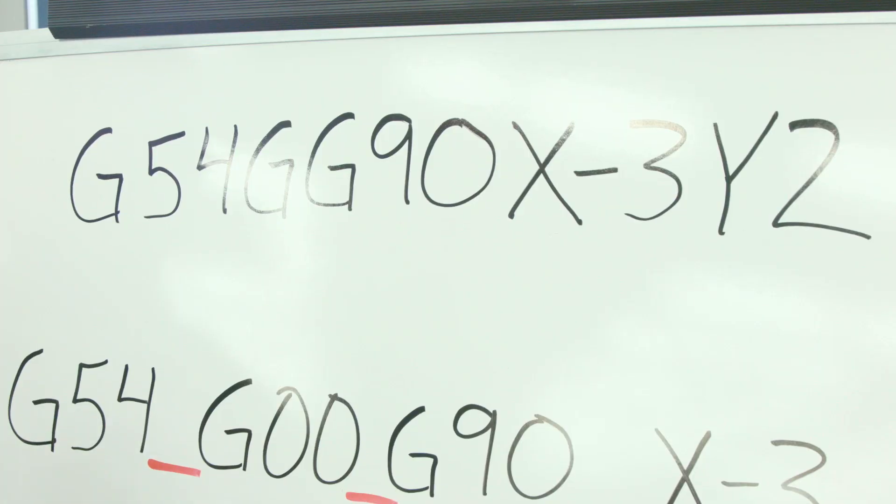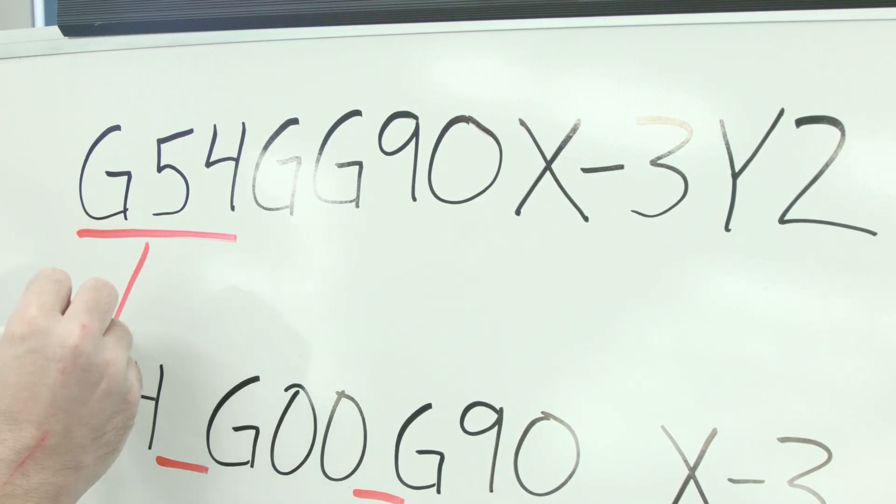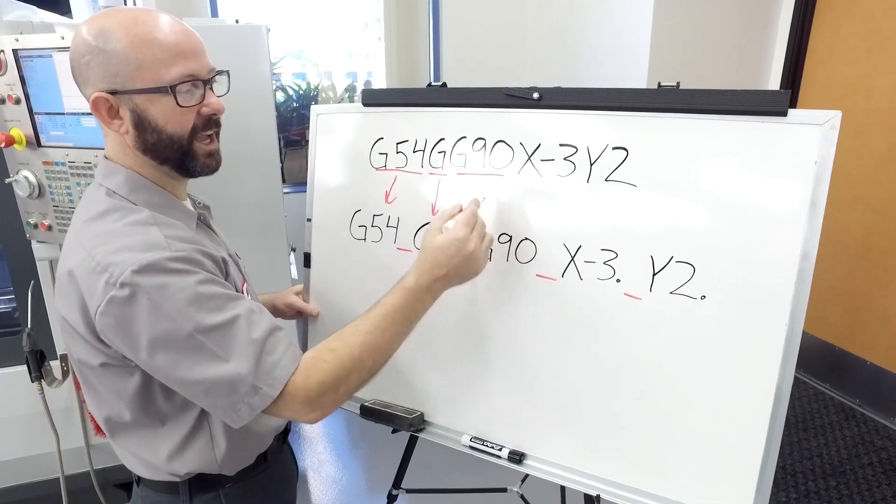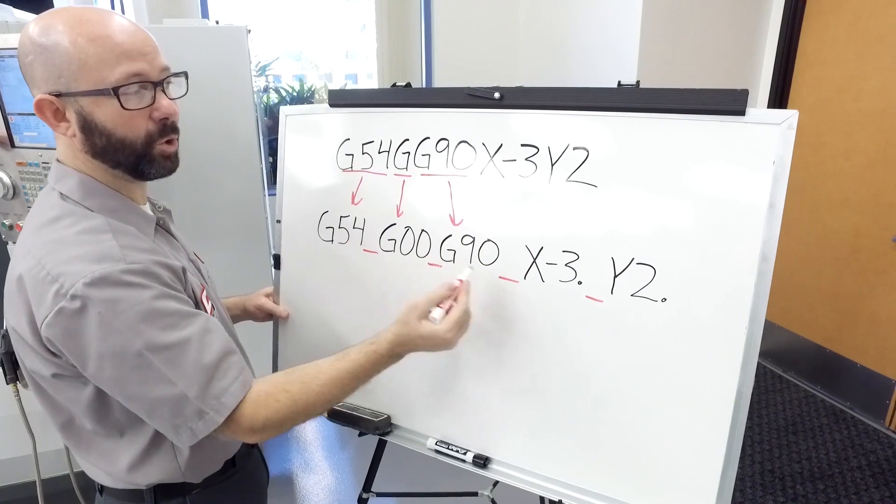When I entered G54, it put G54. It added the space for us. G0, G90—the control adds the spaces automatically.